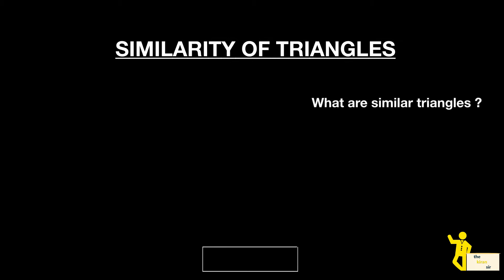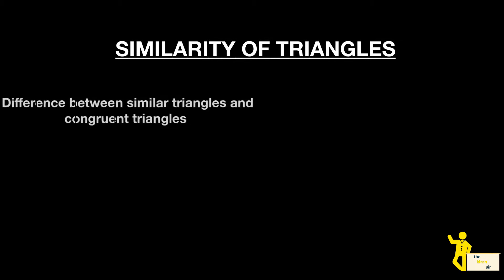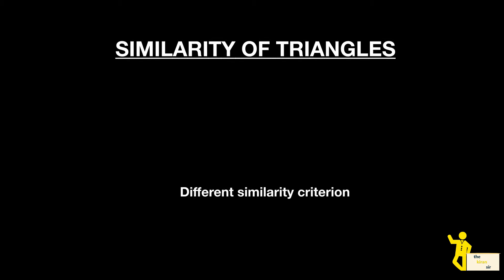Today we are going to study about similarity of triangles. This video is going to be very helpful to understand what similar triangles are. We are also going to study about the difference between congruent triangles and similar triangles — a major problem most students face, since congruent triangles are taught in 9th grade and similar triangles in 10th. We will also cover three similarity criterions: AA similarity, SAS similarity, and SSS similarity.